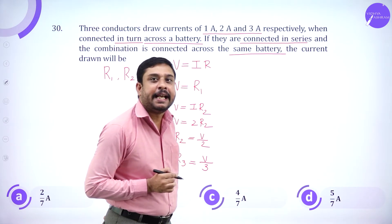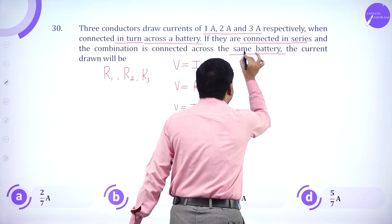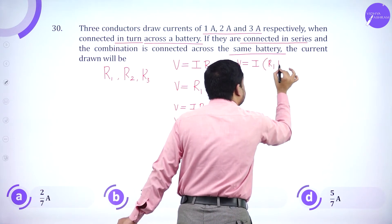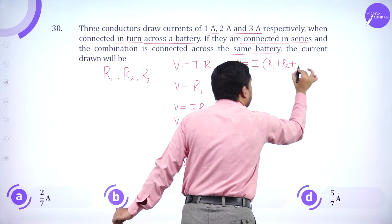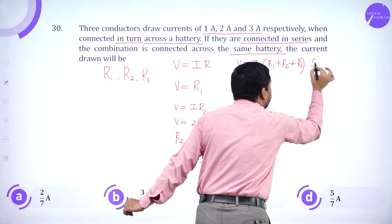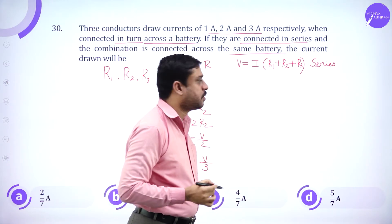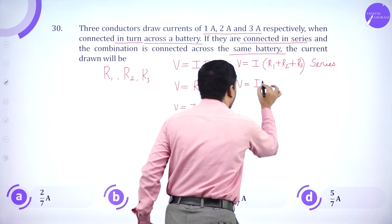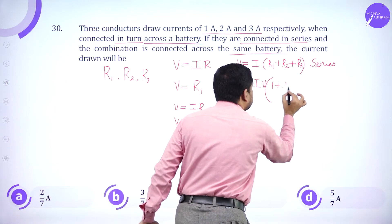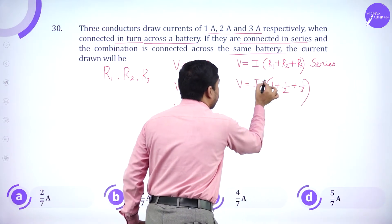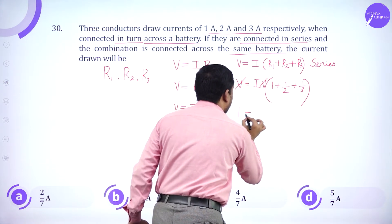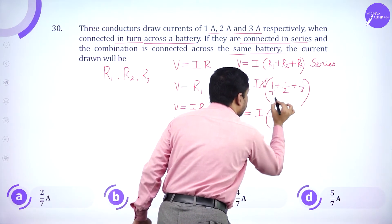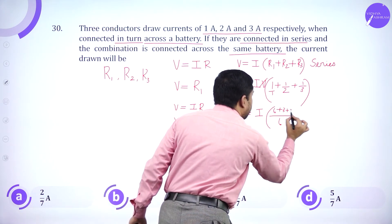First case, V equals R1 because I is 1. Second case, V equals 2 R2 or R2 is V by 2. Similarly, R3 is equal to V by 3. Now, they are connected in series. In the second case, when they are connected in series, we have V equals I, R1 plus R2 plus R3. So V equals I, 1 plus half plus 1 by 3.